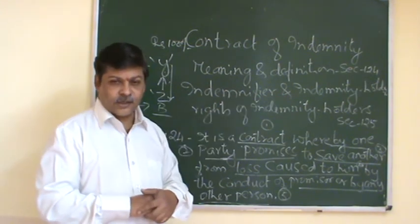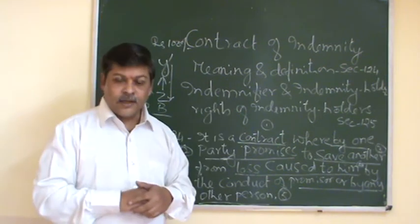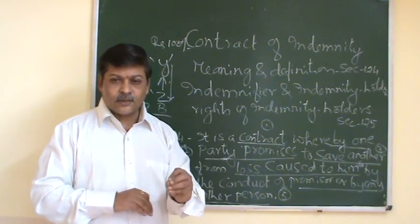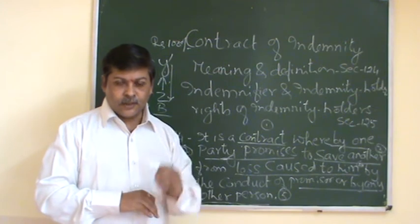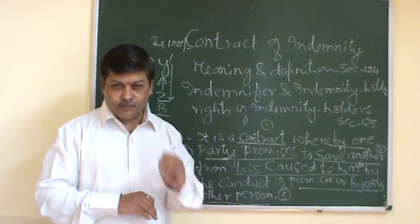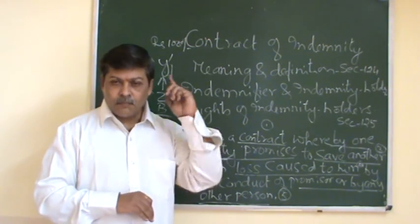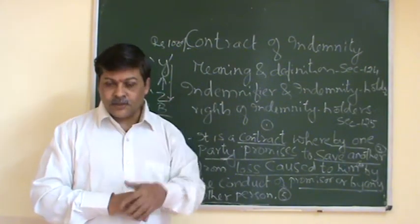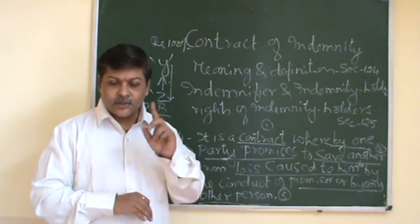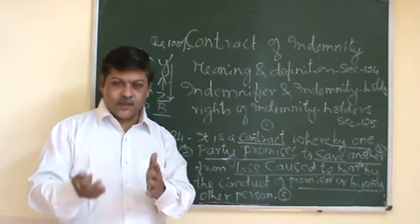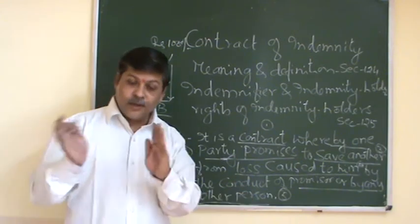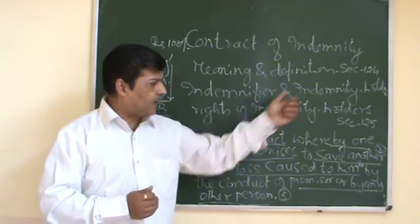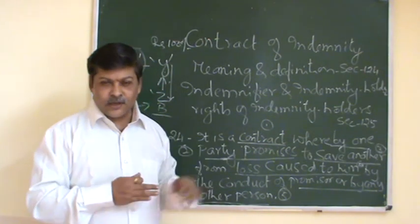From your examination point of view, if they ask 'who is an indemnity holder,' your answer should be: in the contract of indemnity, the person whose loss will be made up by another person — that other person being the promisor or indemnifier — is called the indemnity holder. There is no specific statutory definition given for these terms, so we have to understand them based on the nature of the two parties.